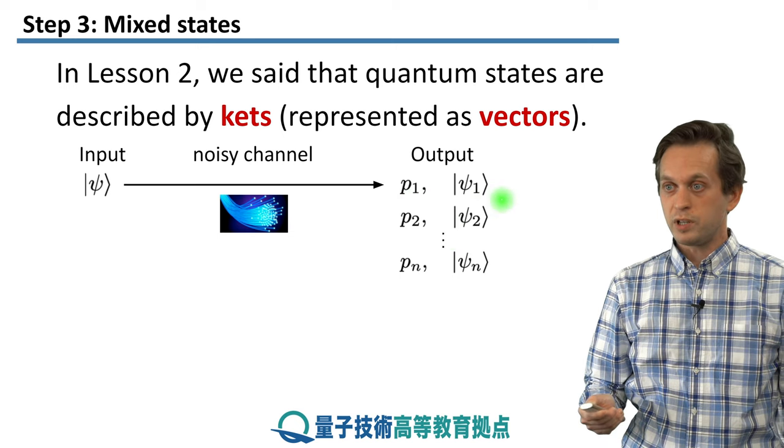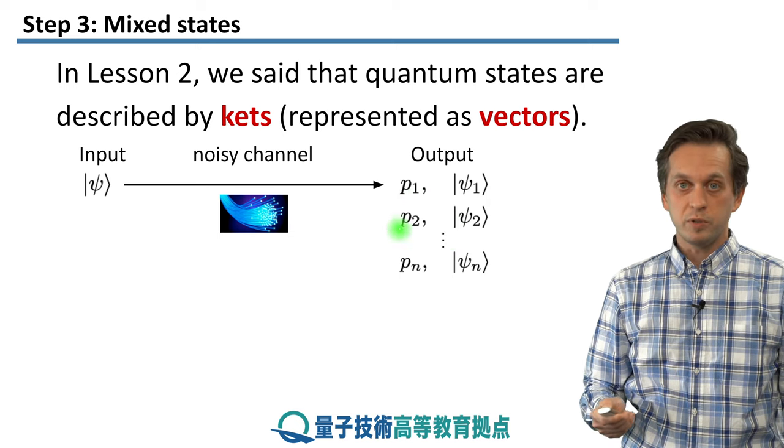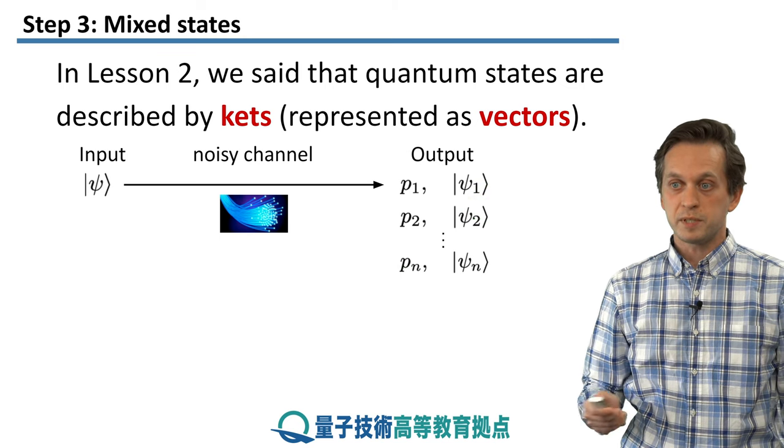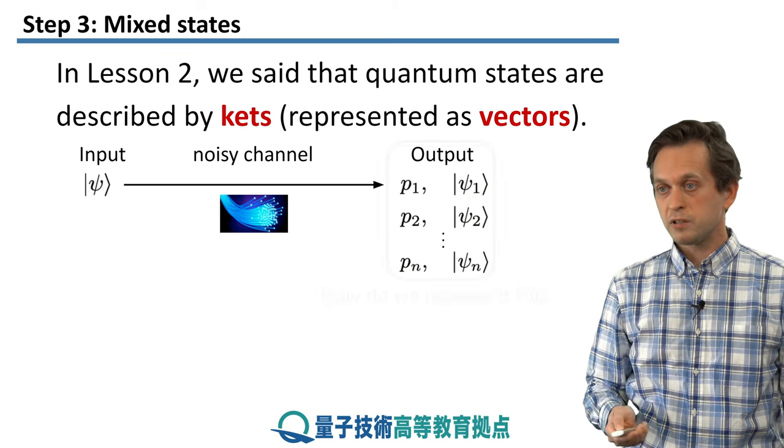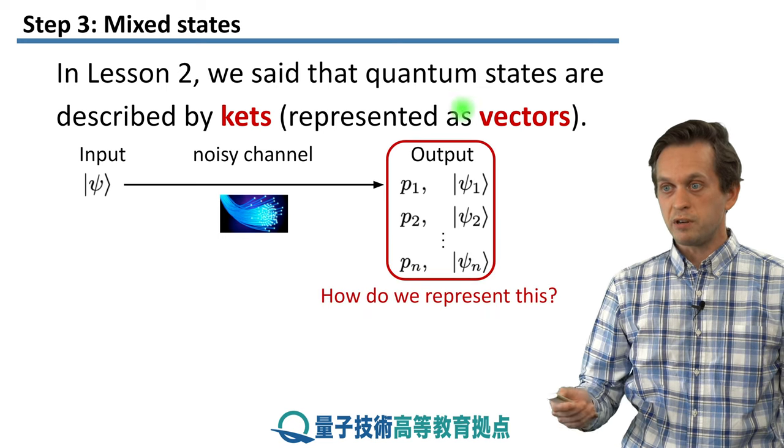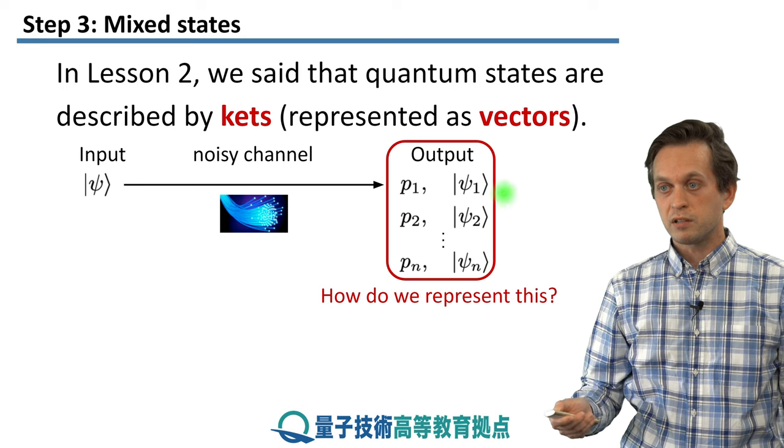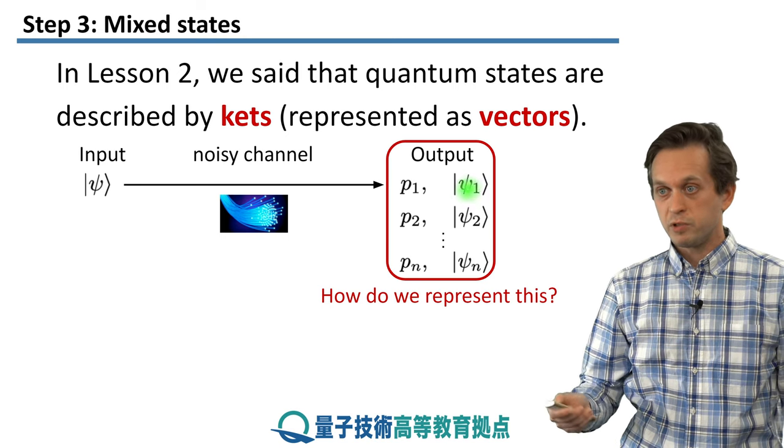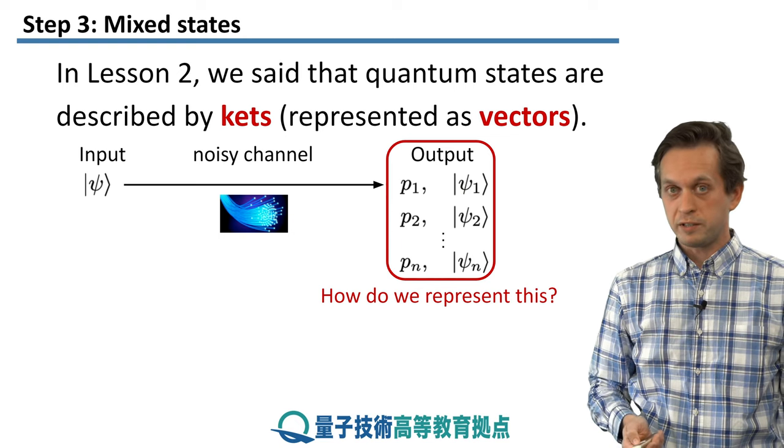For example, with probability P1 we can get state psi 1. With probability P2 we can get another state psi 2, and so on. With Pn we get psi n. So the question now is, how do we represent this scenario here? We don't get just a single deterministic state that is just represented by a ket. We get a distribution. So how do we handle that mathematically?